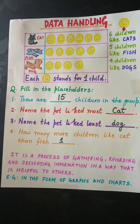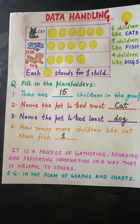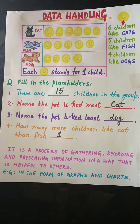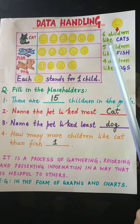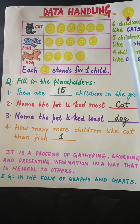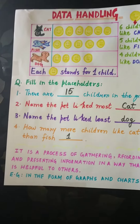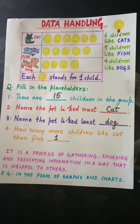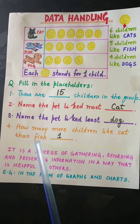Our last question is: how many more children like cat than fish? See the table. 6 children like cat and 5 children like fish. This implies that one more child likes cat than fish.